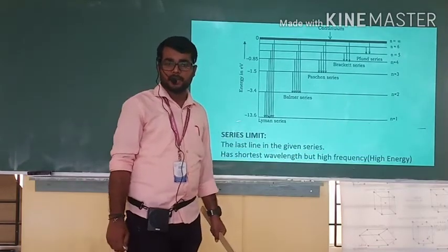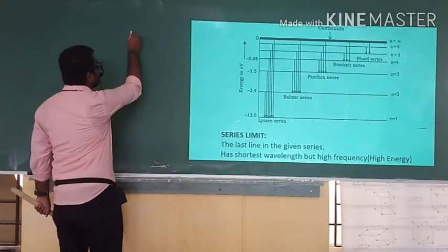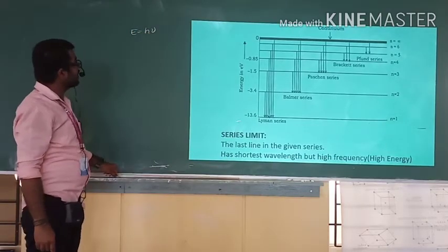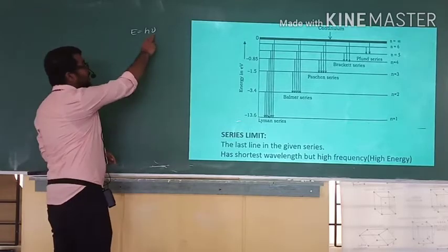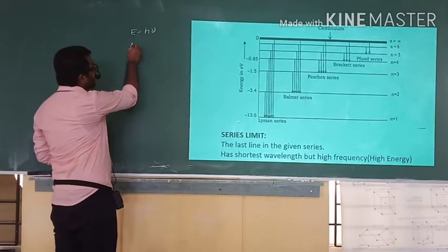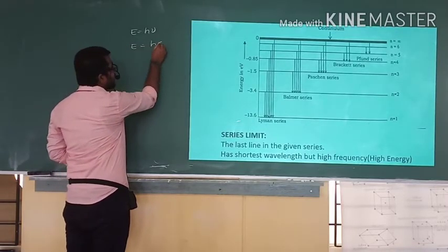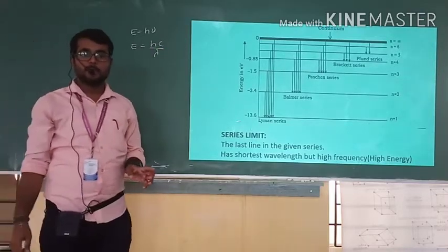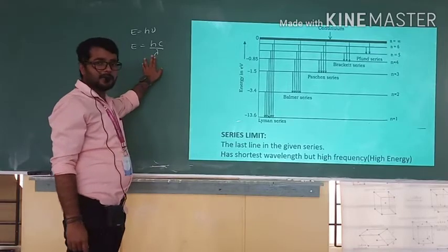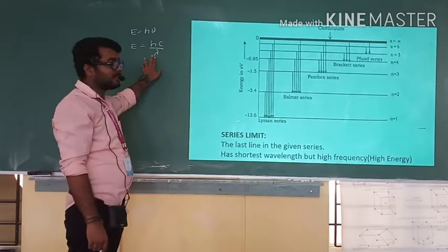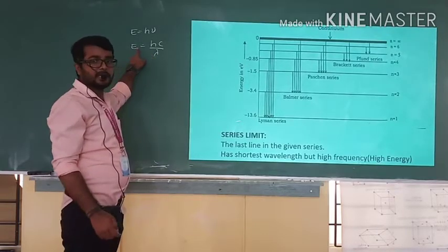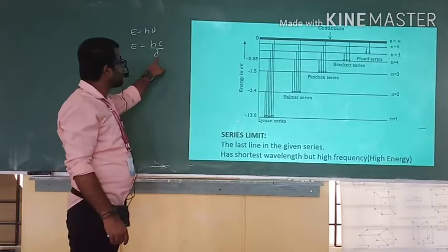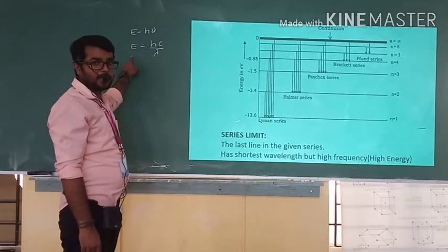The series limit has high frequency and high energy. We know E = hν, where ν is the frequency. In terms of wavelength, E = hc/λ, because ν = c/λ. If λ is very large, E decreases. Since the series limit has a very small λ, E will be maximum.